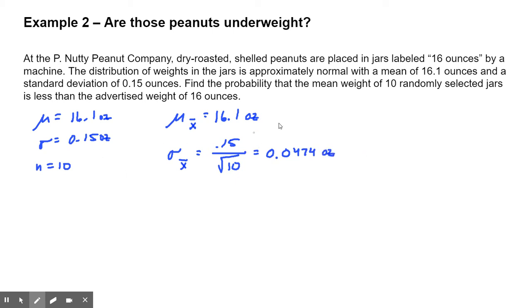This will help me find my Z value. The last thing I'll do is highlight this in the problem: it says the distribution of weights is approximately normal. So this problem can be approximated normally. Just make sure you state that. Remember, no large counts condition. Now it's time to talk about the probability. I'm trying to find the probability that the mean weight x-bar is less than the advertised weight of 16 ounces.